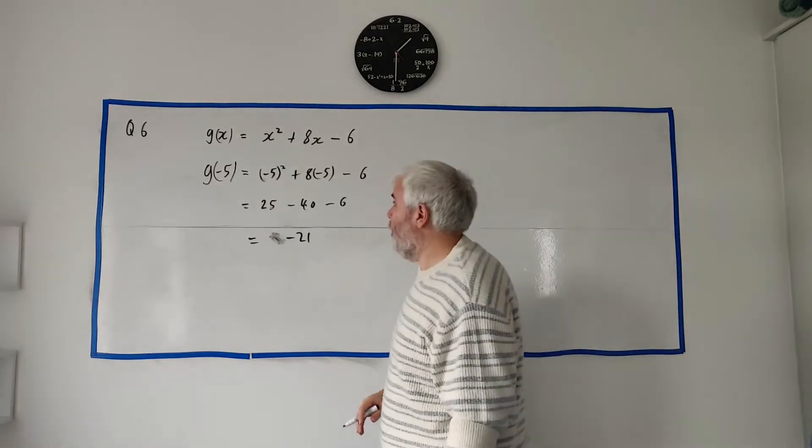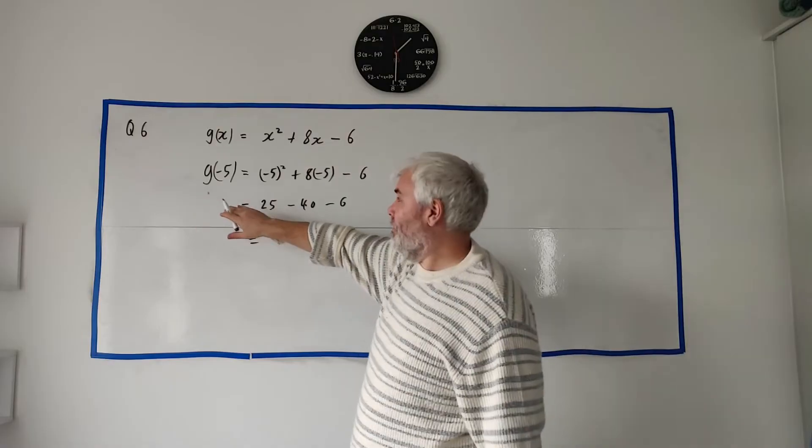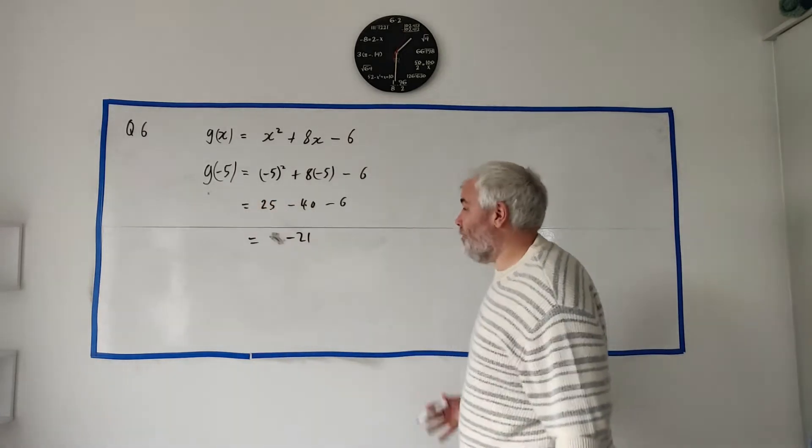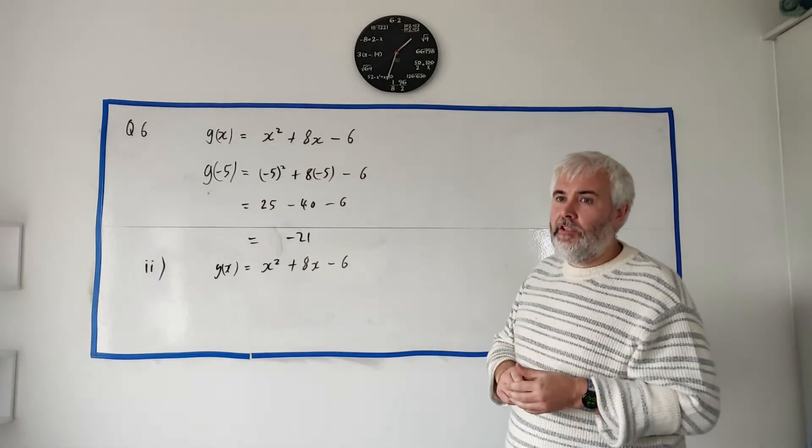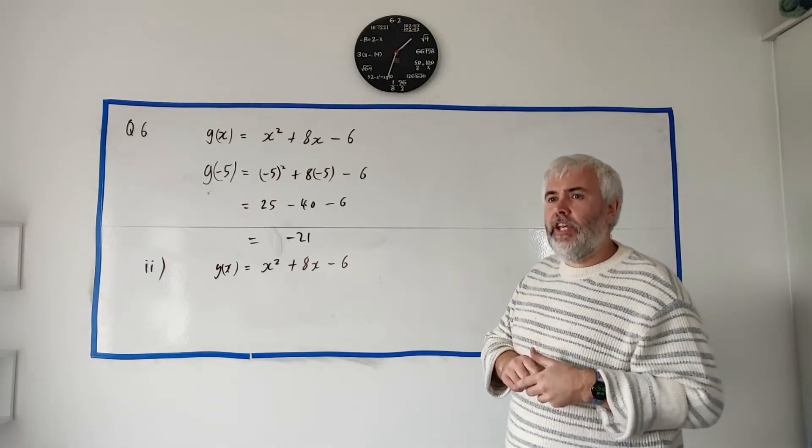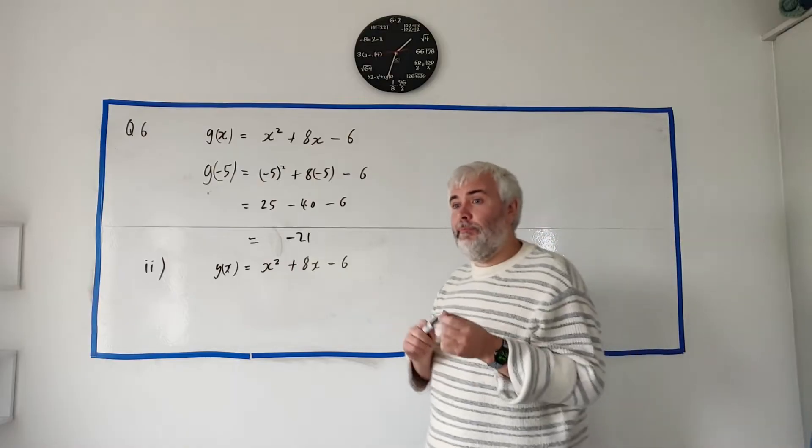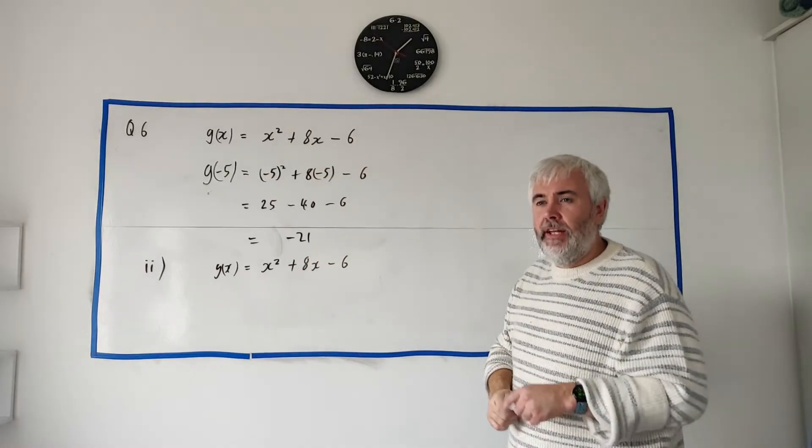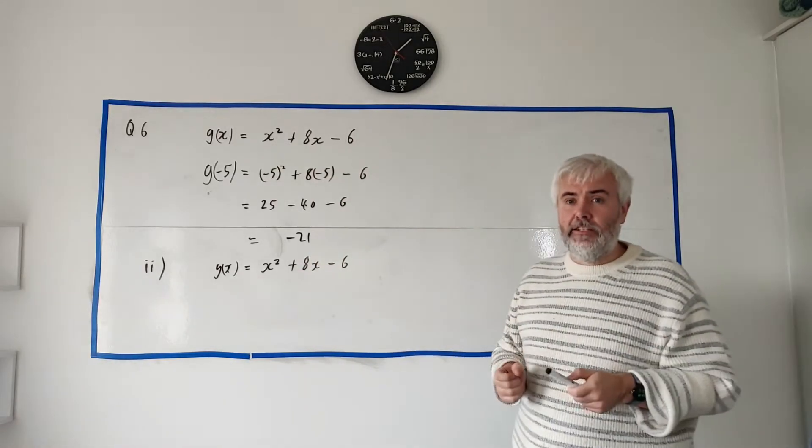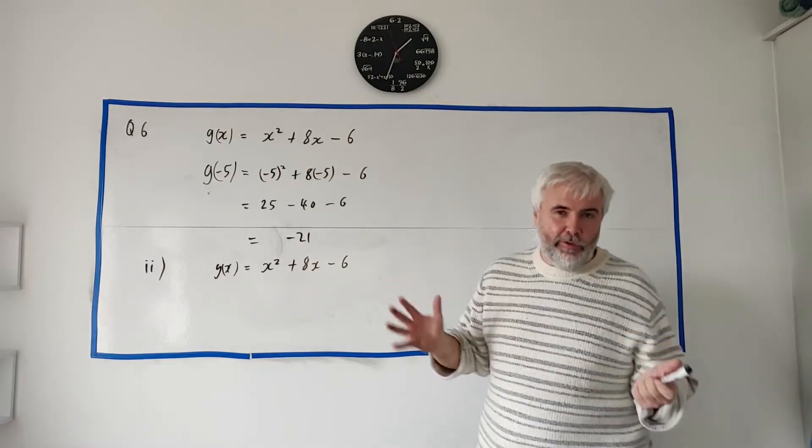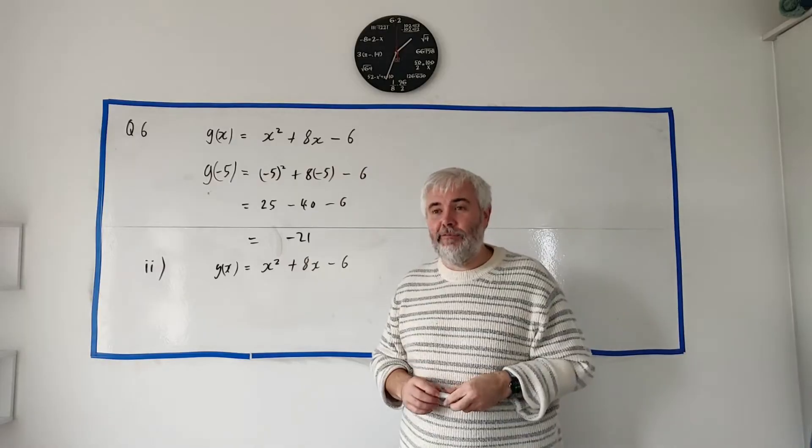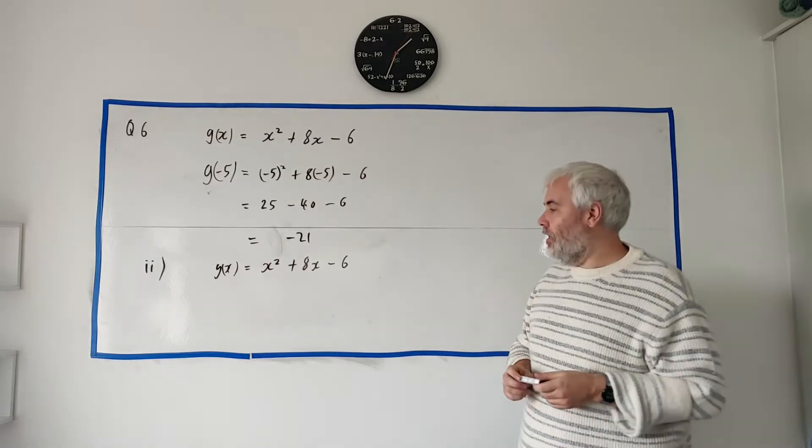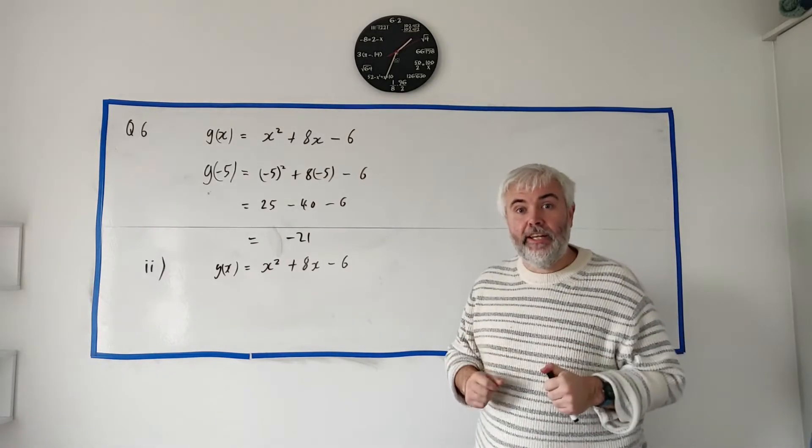Oh, that's Part A(i) already done. So this is very common of a question to see. They'll give you a function and just ask you to put numbers into it. They might give you a few different ones. Very common, you'll see that every exam. Okay, on to Part A(ii). Part A(ii) says use calculus to find the value of x which gives the minimum value of g(x). So we're still using the same function.